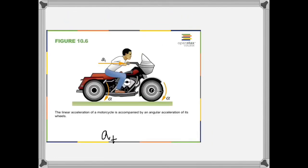Linear motion is connected to rotational motion. When a motorcycle accelerates linearly, the tires start rotating faster too. That means for linear acceleration there is a corresponding angular acceleration. Angular acceleration is the change in angular velocity, while linear acceleration is the change in linear velocity. These two quantities are related by the formula: linear acceleration equals radius multiplied by angular acceleration. Alpha is the symbol for angular acceleration.